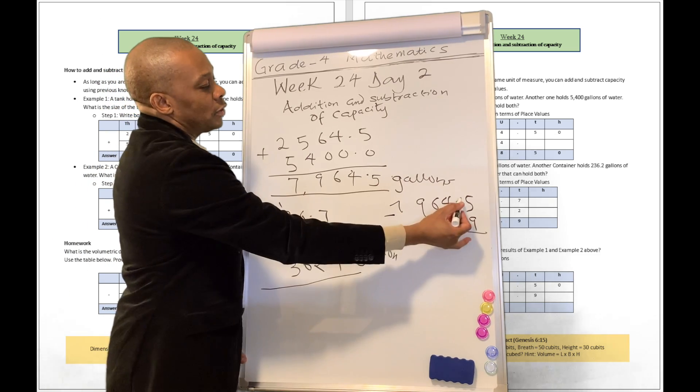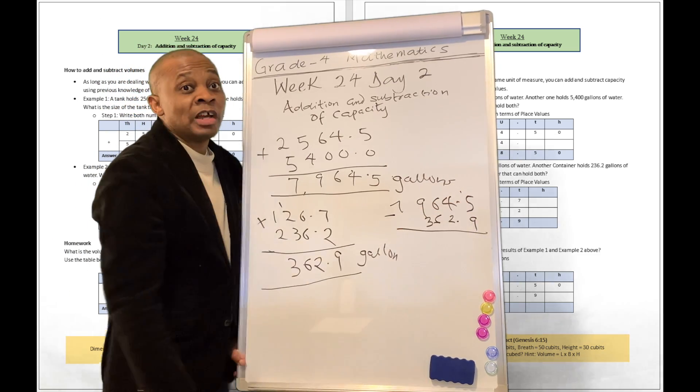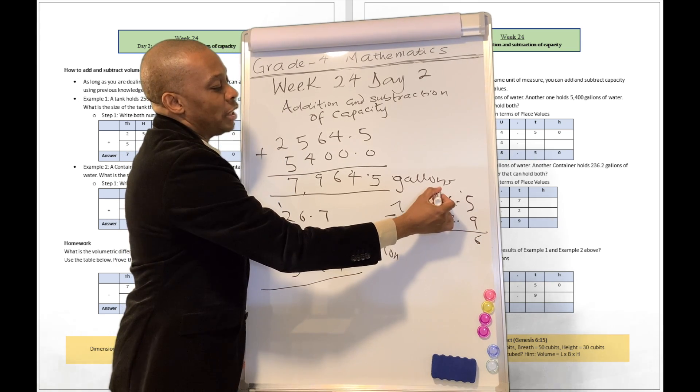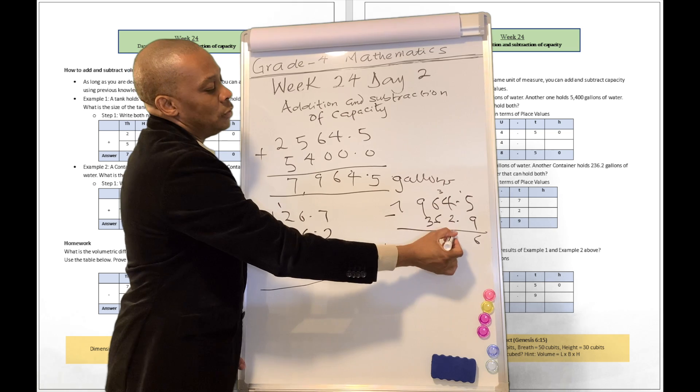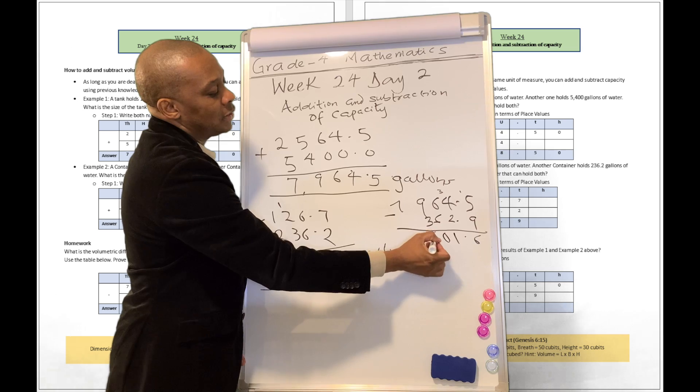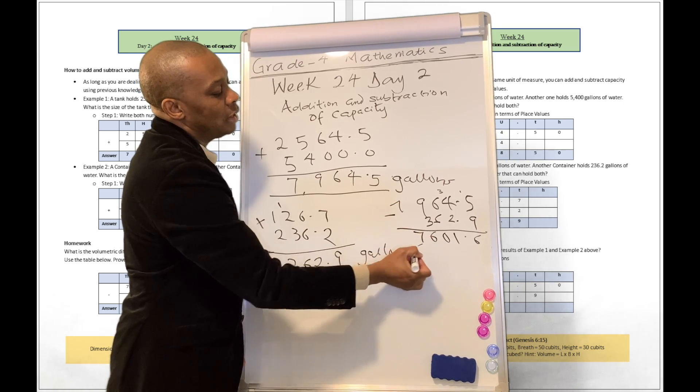So what's going to happen? 15 minus 9, because we can't do 5 minus 9, that's 6 for you. This is not going to be 4 anymore. This is going to be 3. 3 minus 2, that's 1. 6 minus 6, that's 0. 9 minus 3, that's 6. And this is 7.